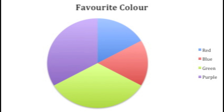A pie graph is a pictorial representation to show parts of a whole. It is a circular chart divided into sectors illustrating numerical proportions. These sectors, or pie slices, show relative sizes of data.